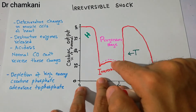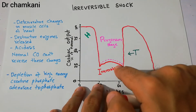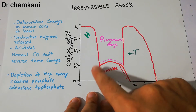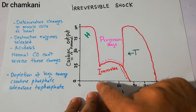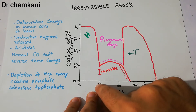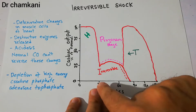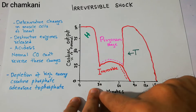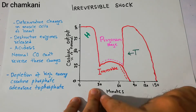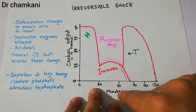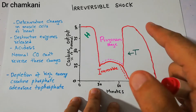Here on the graph we see the progressive stage, where the patient is progressing slowly and gradually with the passage of time. At around 30 minutes the patient has entered this progressive stage and remains in it until around 60 minutes.